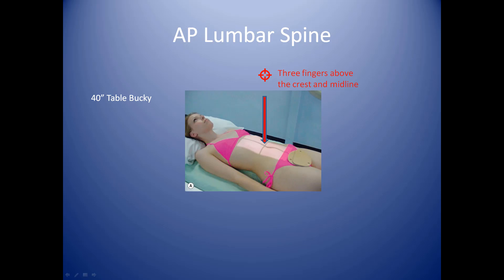Have the patient lying supine on their back. They can bend their knees if they want to, but make sure the knees aren't too high, as their legs can impinge on the image and overlap the pelvis. Remember, we're centering three fingers above the crest and midline with our crosshairs. You are at 40 inches on the table. Close your collimator width to about hip width apart — you're not opening it as if x-raying the abdomen, but closing it in to limit it to the anatomy as much as possible.